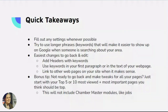Quick takeaways recap: fill out any settings whenever possible. Try to use longer, highly relevant phrases or keywords — so instead of 'beach,' say 'Myrtle Beach, South Carolina,' which is a longer, more relevant phrase that will make it easier to show up on Google when someone is searching about your area. Some of the easiest changes for existing webpages are adding headers with keywords, using keywords in your first paragraph, and linking to other webpages on your site when it makes sense. As a bonus tip: if you're not ready to tweak all your webpages, just focus on your top five to ten most viewed or most important webpages and start there. Note that this does not include ChamberMaster modules like your job board or hot deals, as those are edited in a different place.